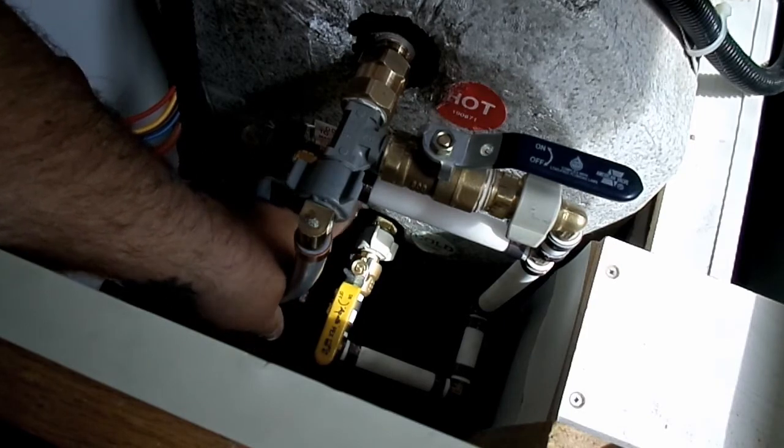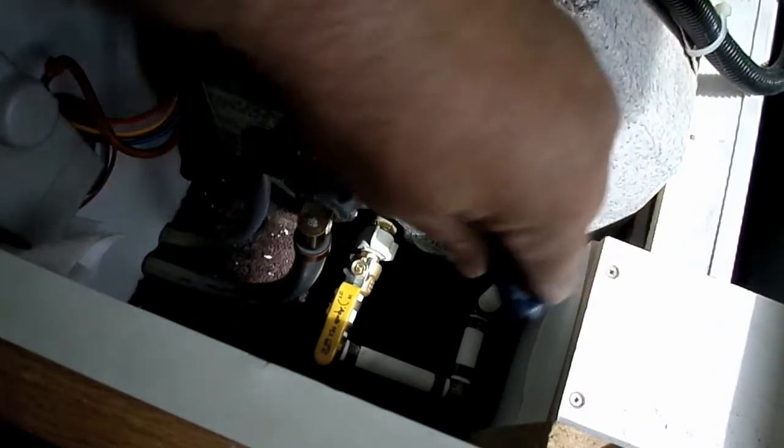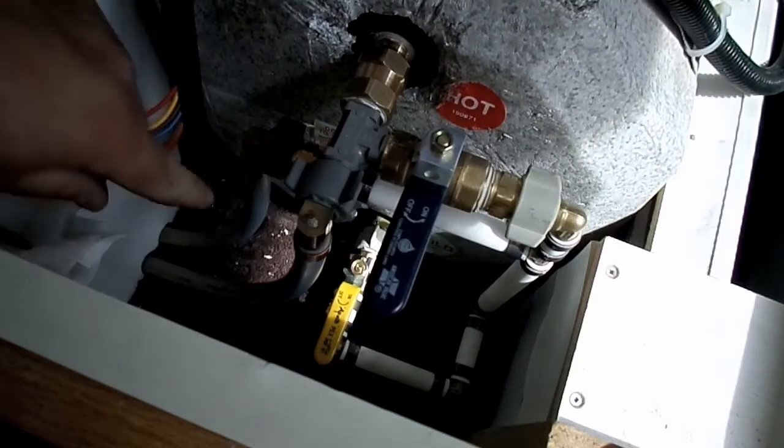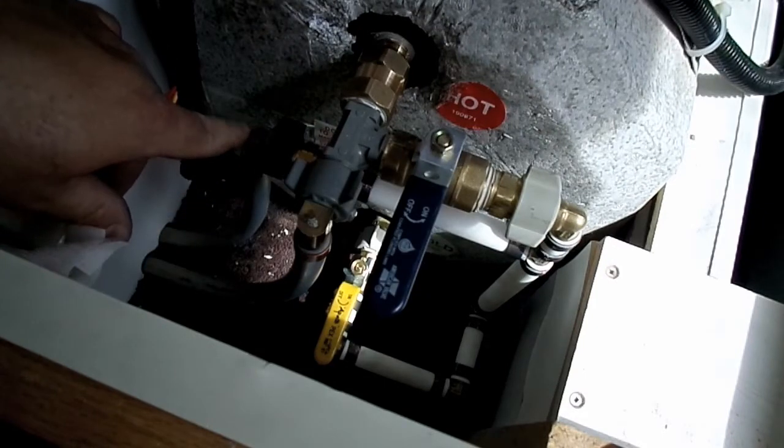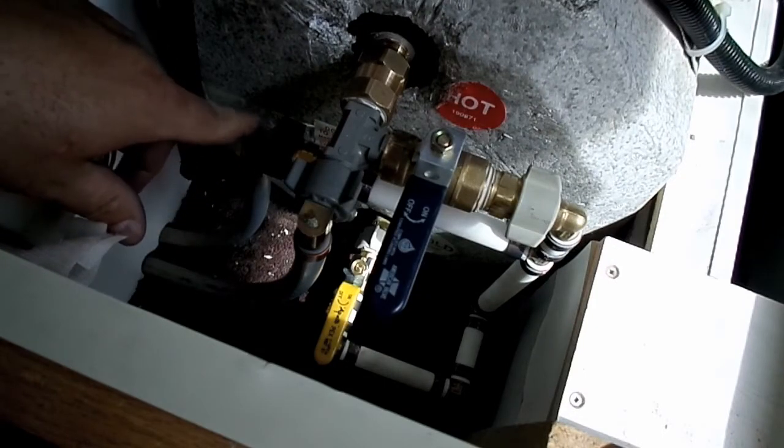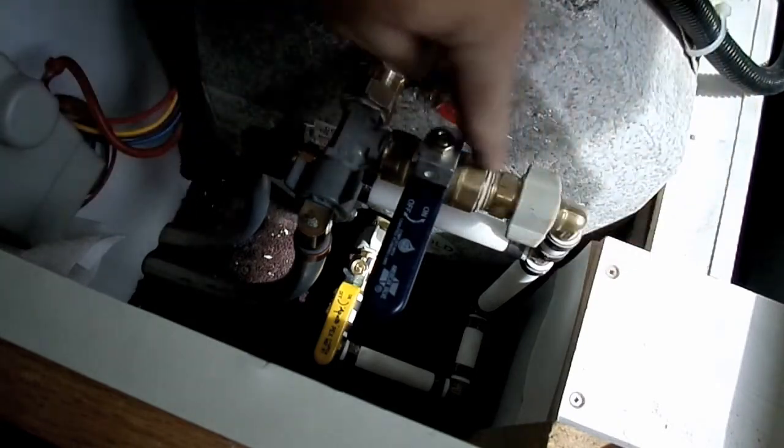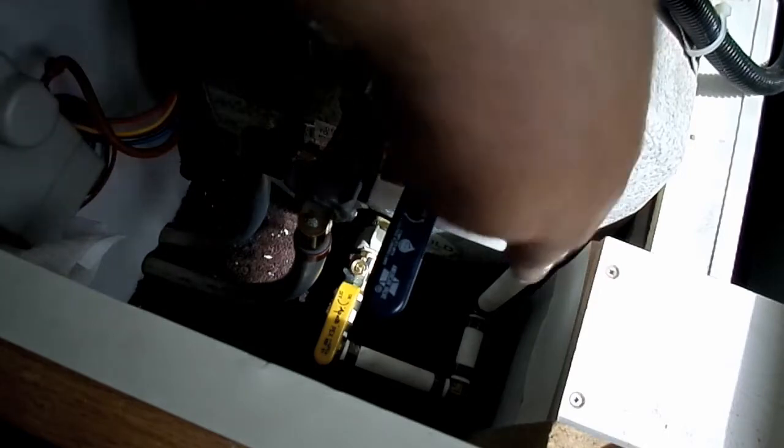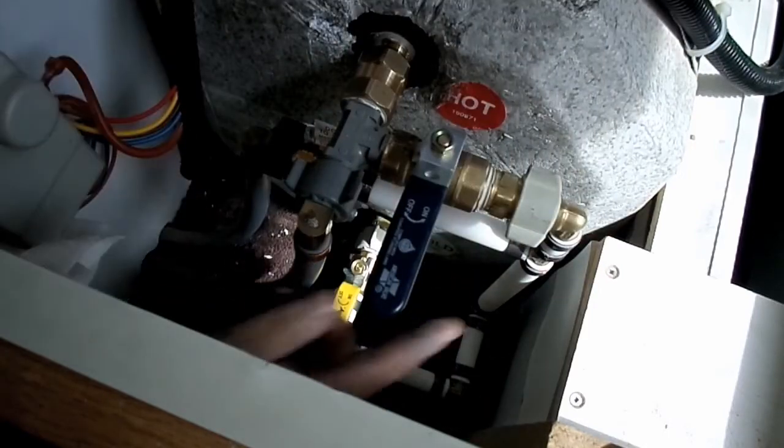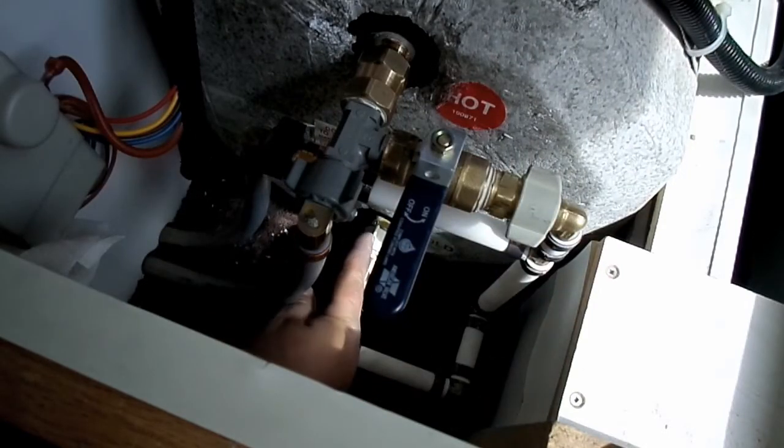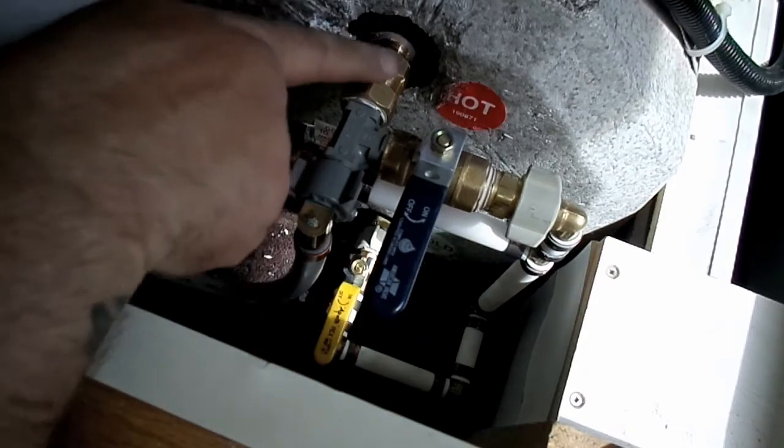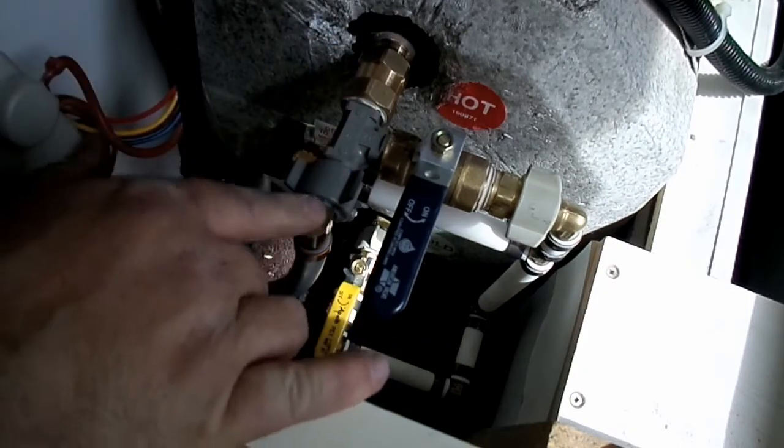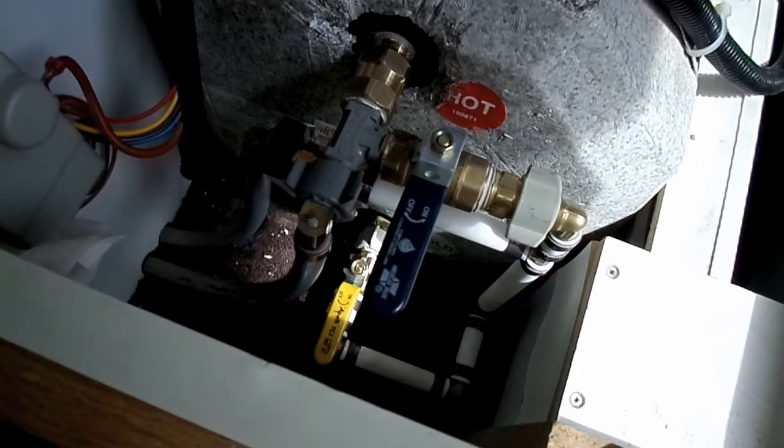What this does is the water goes in this main line here, comes up through here, goes down through the pipes here and into the water heater where it's heated, and then it comes through the check valve into the coach. So basically, that's the setup there.